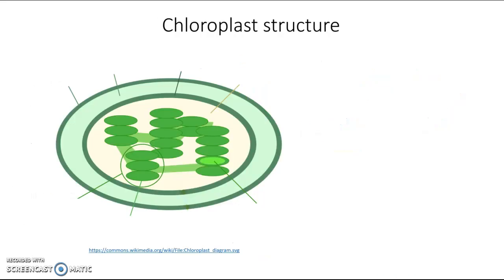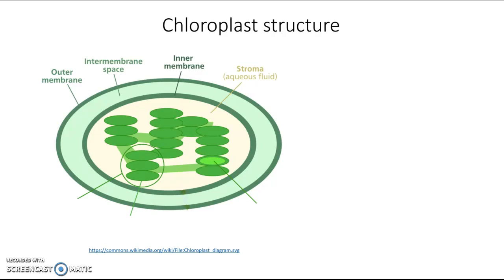Let's take a closer look at chloroplast structure. On the very outside is the outer membrane, and the next layer in is the inner membrane. Like the mitochondrion, there's a space between them known as the intermembrane space — that means it's the space between the membranes. Deep inside the chloroplast there's a liquid known as the stroma, an aqueous fluid filled with salts, proteins, and enzymes. This is sort of like the cytosol of the chloroplast.